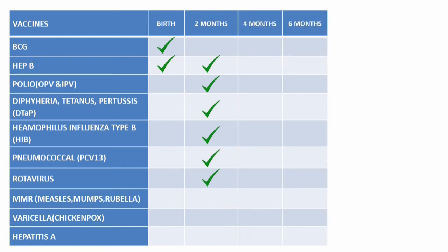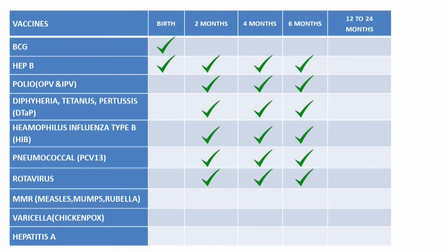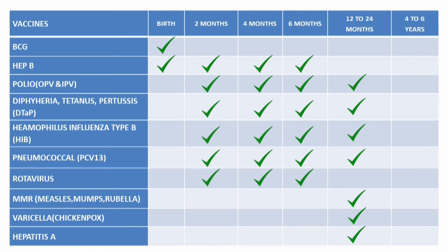The four-month and six-month schedules repeat all the two-month vaccines. Between 12 to 24 months, seven vaccines are given: polio, DTAP, HIB, pneumococcal vaccine, MMR, varicella, and hepatitis A vaccine — plus a flu vaccine if it's flu season. A second dose of hepatitis A is repeated after six months. Next, at four to six years, polio, MMR, and varicella vaccines are given.